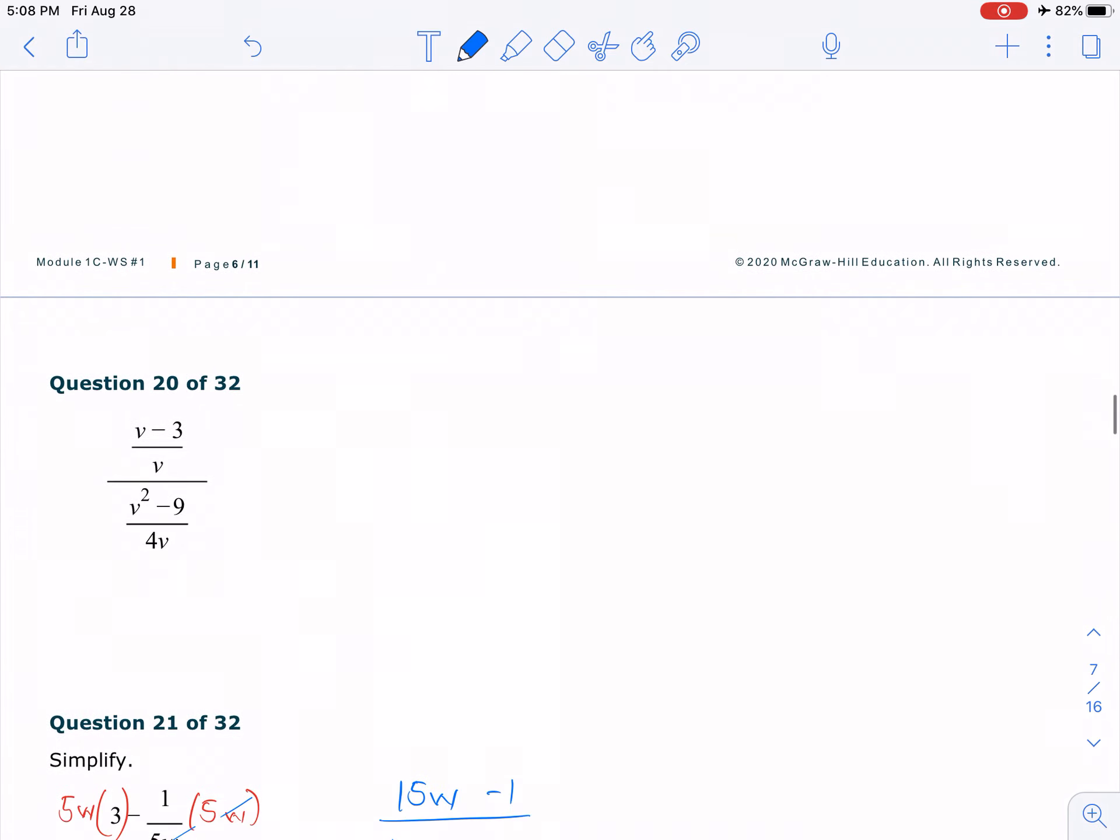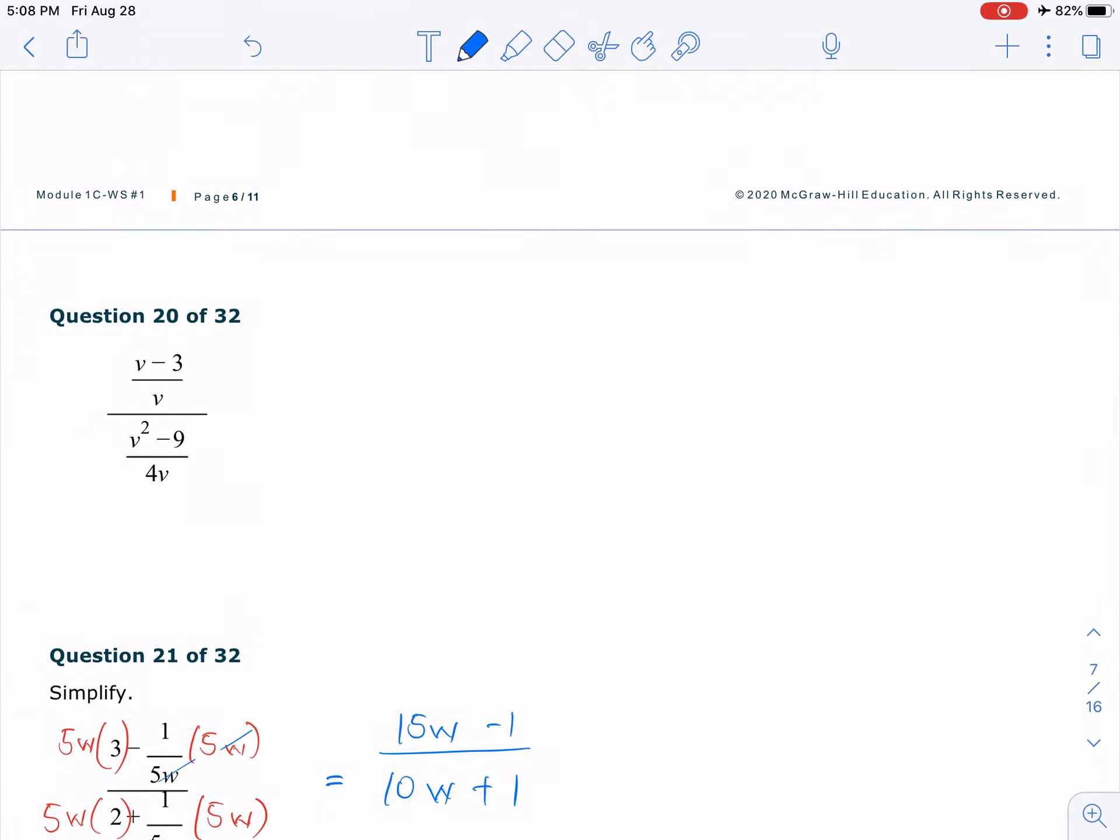So you see right here, number 20. Hopefully you see that we have a fraction over a fraction. So instead of multiplying the LCD, I'm just going to simply rewrite as a quotient. So I have a division problem now instead of a complex fraction.